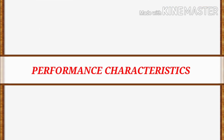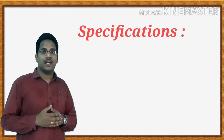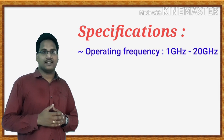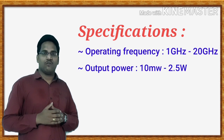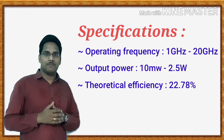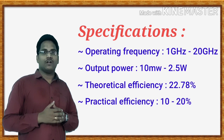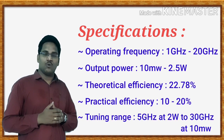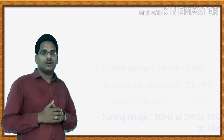Now let us see the performance characteristics of the Reflex Klystron oscillator. The operating frequency is 1 GHz to 20 GHz, output power is 10 milliwatts to 2.5 watts, theoretical efficiency is 22.78 percent, practical efficiency is 10 to 20 percent, and the tuning range is 5 GHz at 2 watts to 30 GHz at 10 milliwatts.